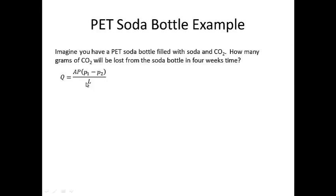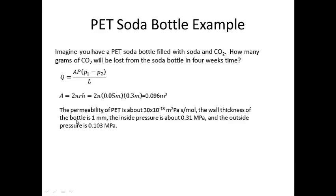We can begin by assuming that we have a homogeneous PET polymer membrane film, so we use our homogeneous film equation to solve for the mass flow rate per unit time. We put in some numbers for the approximate radius of a polymer soda bottle — 0.05 meters — and 0.3 meters height, to calculate the surface area of a general cylinder. We'll treat our polymer soda bottle as a cylinder for simplification, and we get an area of 0.096 meters squared. We then have to input the permeability of PET, which is about 30 times 10 to the negative 18th meters squared Pascal seconds per mole.